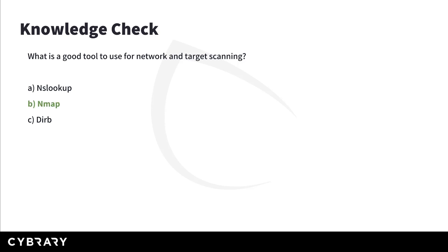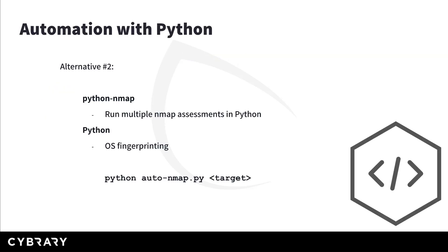Python-nmap is a Python library that allows us to instantiate and run multiple nmap scans programmatically by writing lines of code. We would write a Python script to run each scan sequentially and save the output of each scan to file. We could then use Python for OS fingerprinting, or simply do a ping from within Python to the host and based on the response determine the OS. All of this would be done from a single script, so running something like python auto_nmap.py against a target would achieve our goals in just one instruction instead of multiple terminal commands.